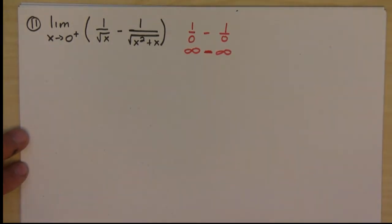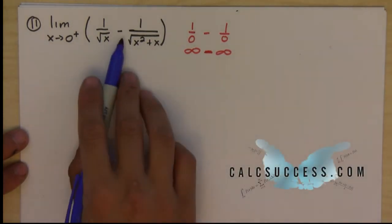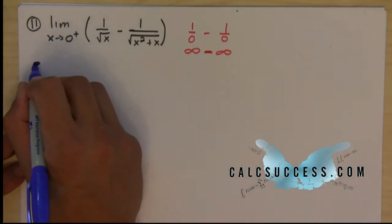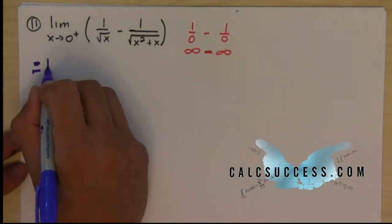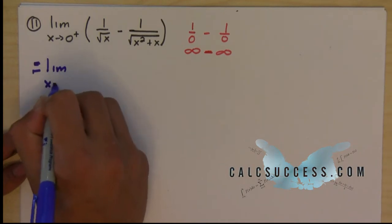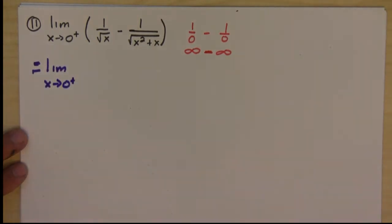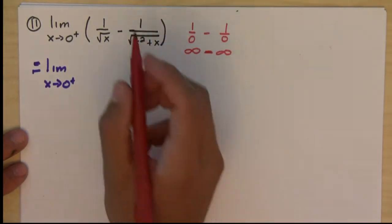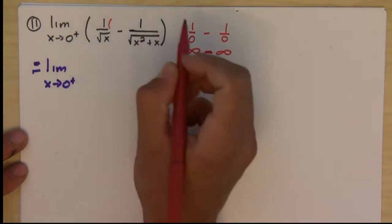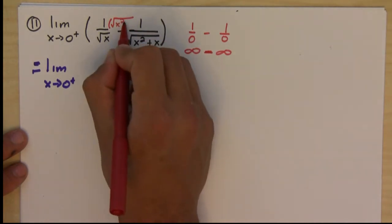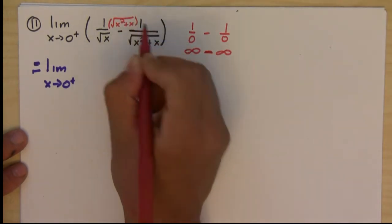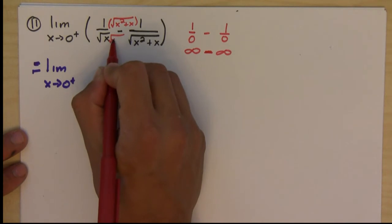The first thing that we should try to do, since we have two different fractions here, is to try to combine them into one fraction. So to do that, we need the common denominator. The first fraction is going to need a square root of x squared plus x, top and bottom.